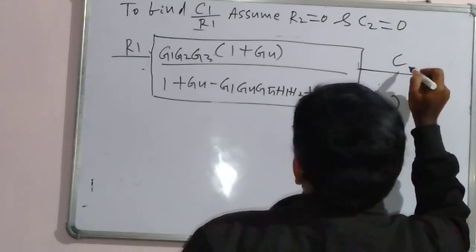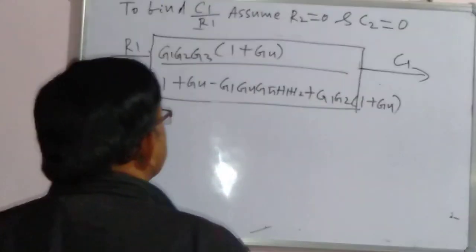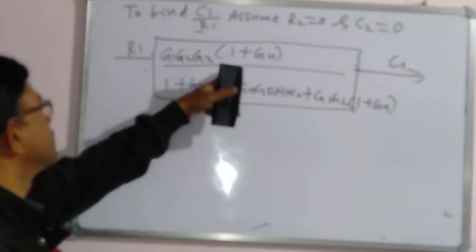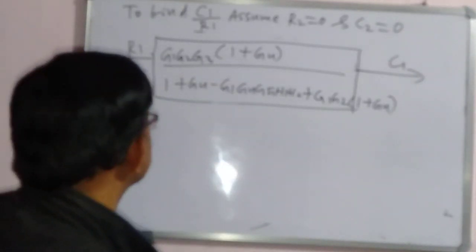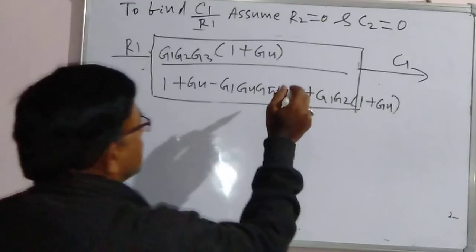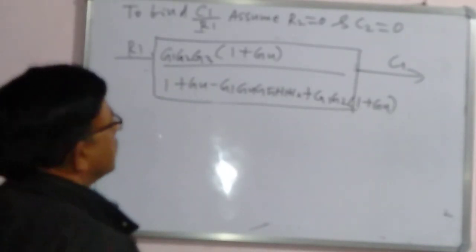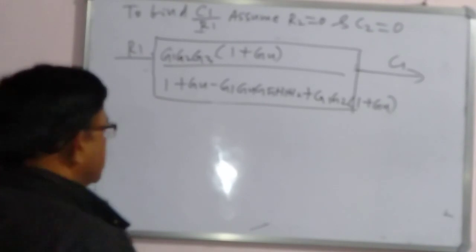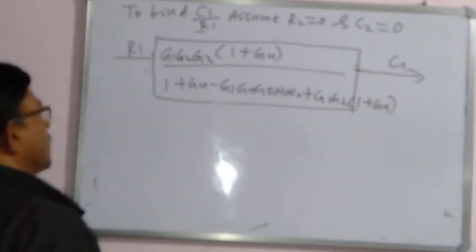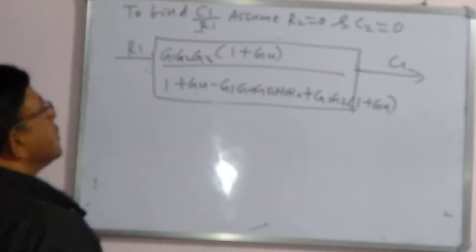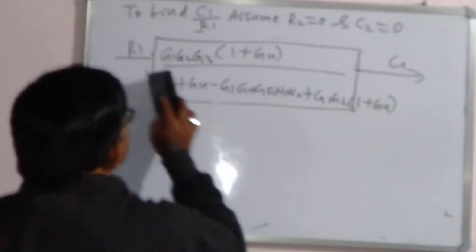So this is C1. The answer for C1/R1 is: G1·G2·G3·(1+G4) divided by 1 plus G4 minus G1·G4·G5·H1·H2 plus G1·G2·(1+G4). This is the transfer function C1/R1. Similarly, we can find out C2/R2 by assuming C1 and R1 are equal to zero. Thank you very much for watching this video.